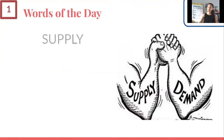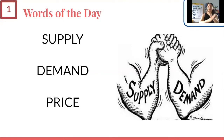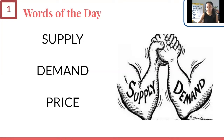Our words of the day are supply, demand, and price. I really like this picture that shows two people arm wrestling, because that's kind of how supply and demand work. They kind of shift on their own, and because one moves the other moves — it's very much like an arm wrestle. You can think about price as being like the point of who's winning or losing. Keep that metaphor in mind as we go through this.